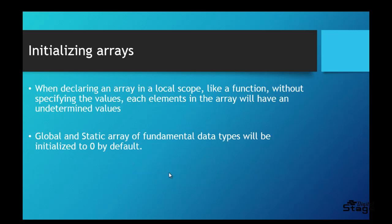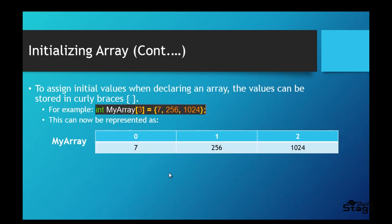Before you know how to initialize an array, note that when declaring an array in a local scope — like within a function, even the main function — without specifying values, each element in the array will have an undetermined value. It will randomly put any value at each location in the array. However, global and static arrays of fundamental data types will be initialized to zero by default.